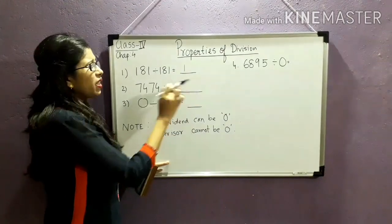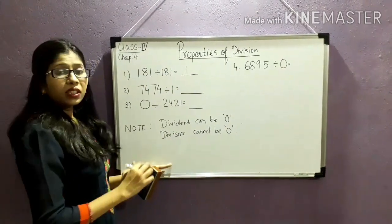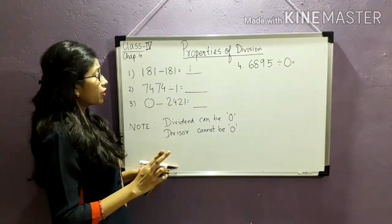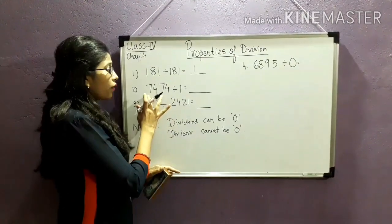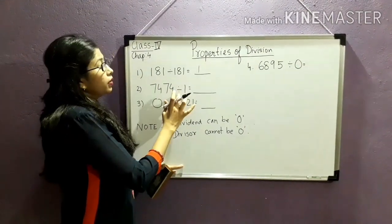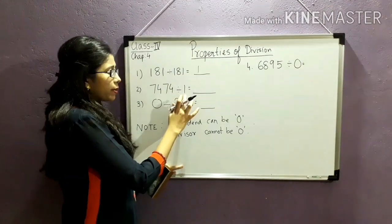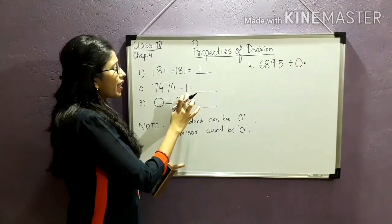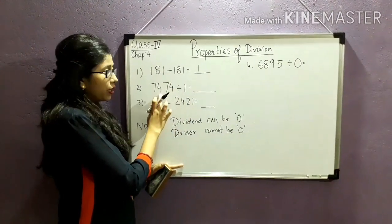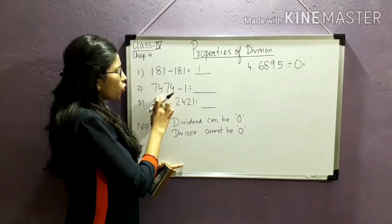Now the second property of division says that if the dividend is divided by divisor 1, you will get the same number dividend as quotient. So my quotient is 7474.